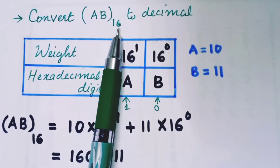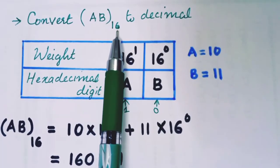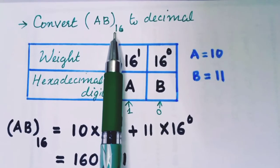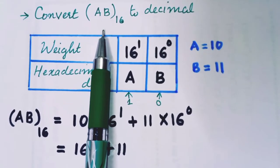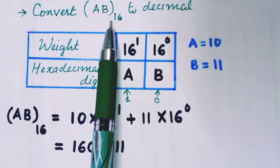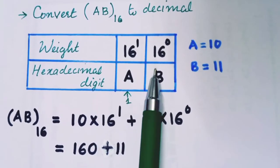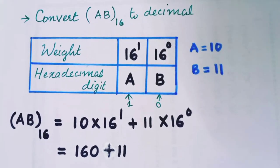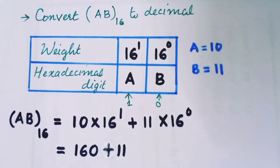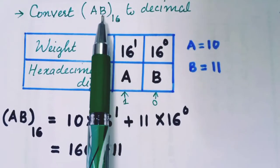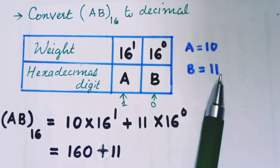Convert AB in Base 16 to Decimal. AB is a hexadecimal number. In hexadecimal, A equals 10 and B equals 11. We will use the hexadecimal number table in detail — you can click the button for more information on hexadecimal numbers.